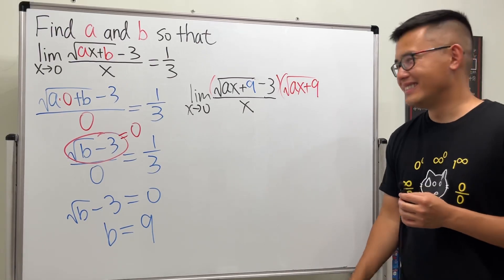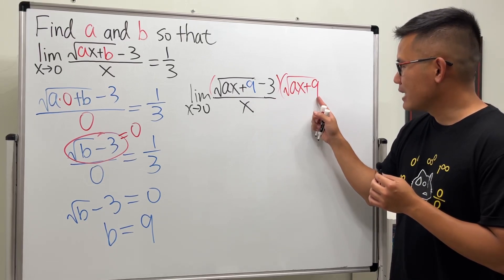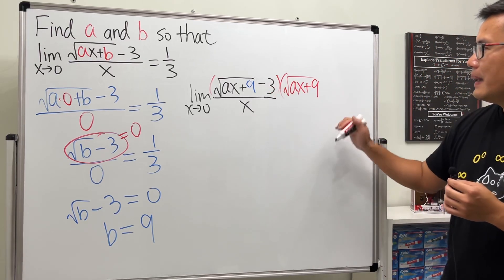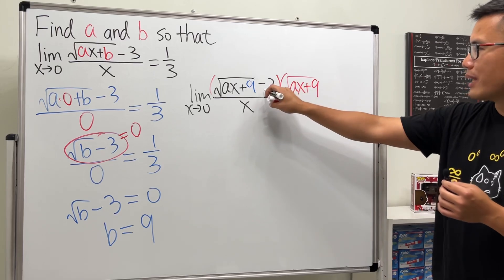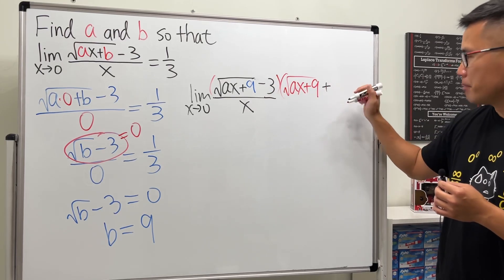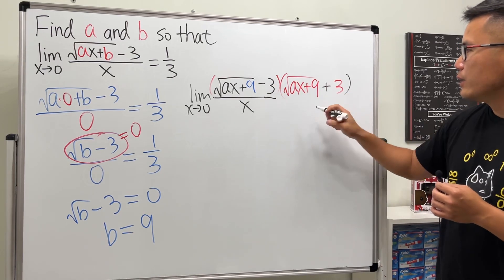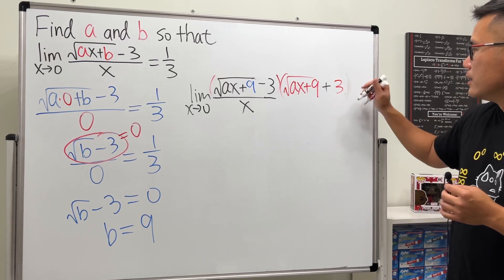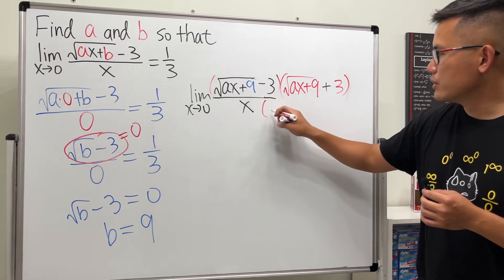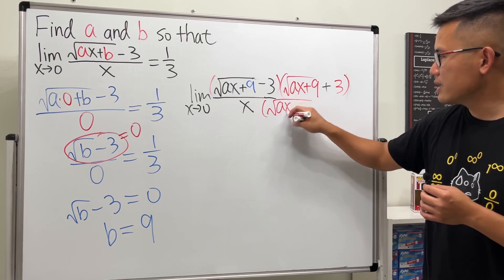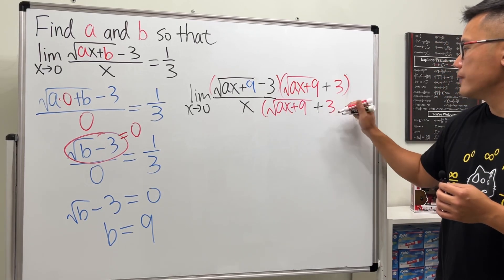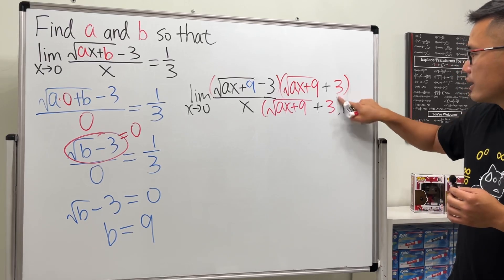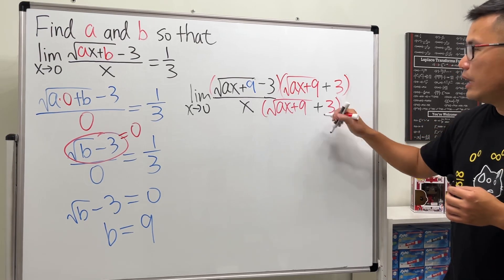Which is just this: square root of ax plus nine—I really don't like to have like nine and a in the same question, but too bad—anyway, ax plus nine, the square root, and then minus three right here. Right, so we will have to change that to plus three, and then do the same thing on the bottom.